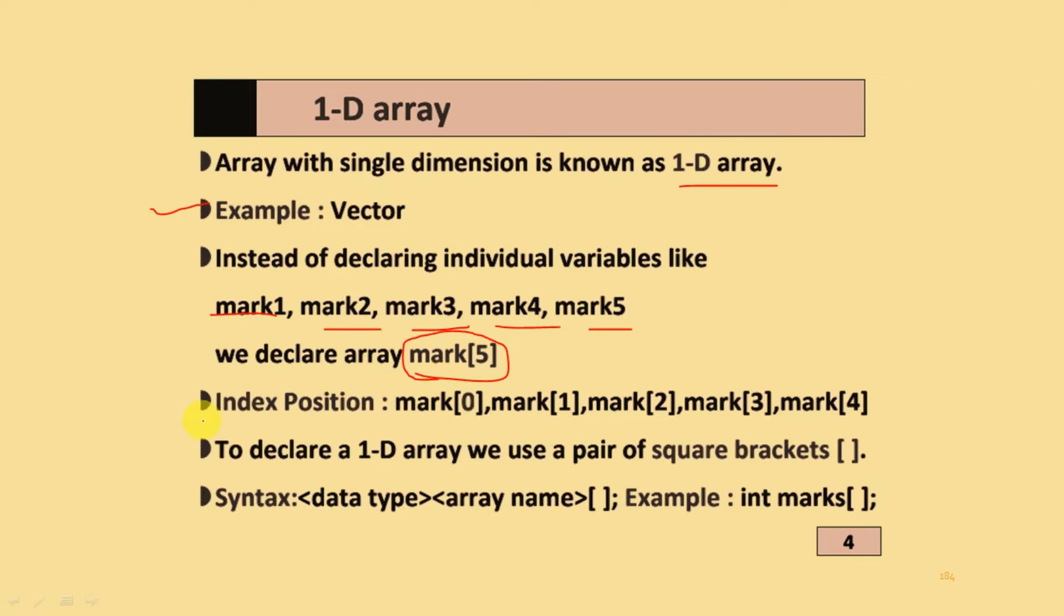Index position starts with 0: mark[0], mark[1], mark[2], mark[3], mark[4]. To declare one dimension array, we use a pair of square brackets. Syntax is data type, array name, and bracket. Example: int marks[];